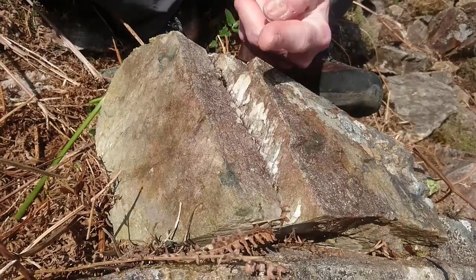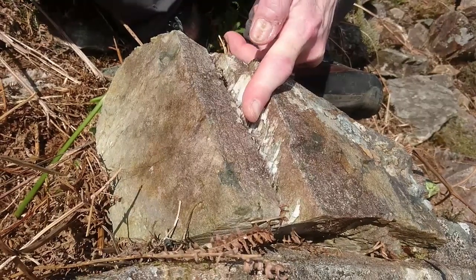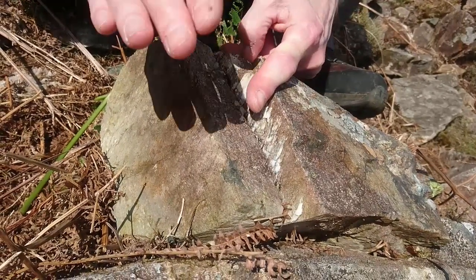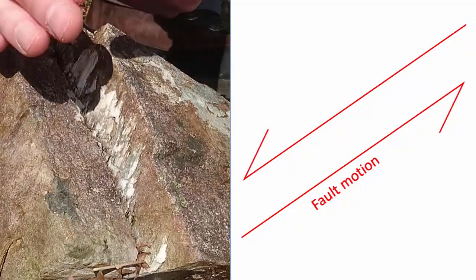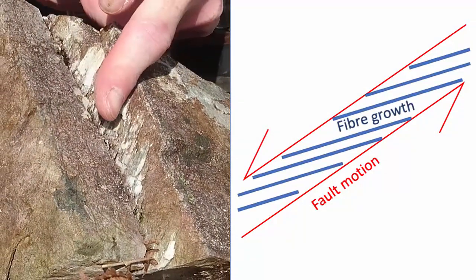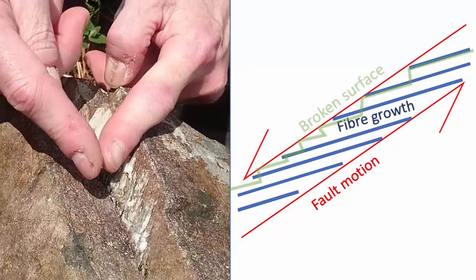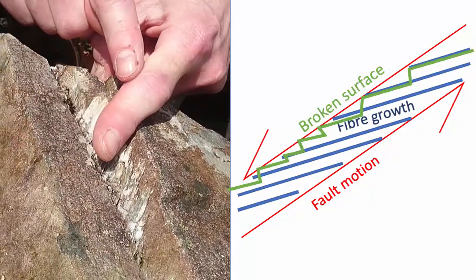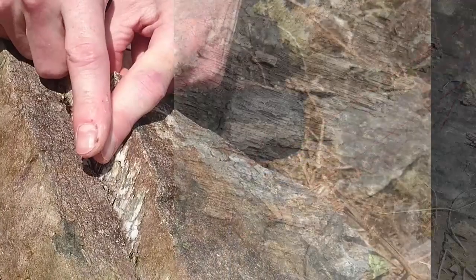That means the quartz fibers are all pointing like this, and it means the fault motion was the top half moving downwards — so the fibers were dragged around by that. When you rub your finger up you're feeling the stubby ends of them, and when you're rubbing down you're feeling the long length of them.